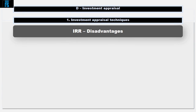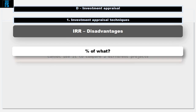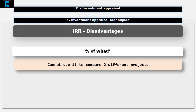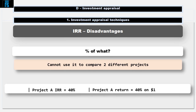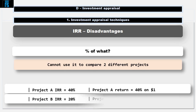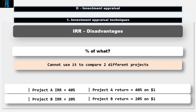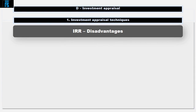However, there are some problems with IRR. As a percentage measure, it always begs the question: percentage of what? For this reason, you cannot use it to compare two different projects. For example, suppose project A has an IRR of 40% and project B has an IRR of 20% — it looks like project A is preferable. However, suppose project A gives you a 40% return on a dollar and project B gives you a 20% return on a million dollars. Clearly project B would make you wealthier, but IRR indicated project A.